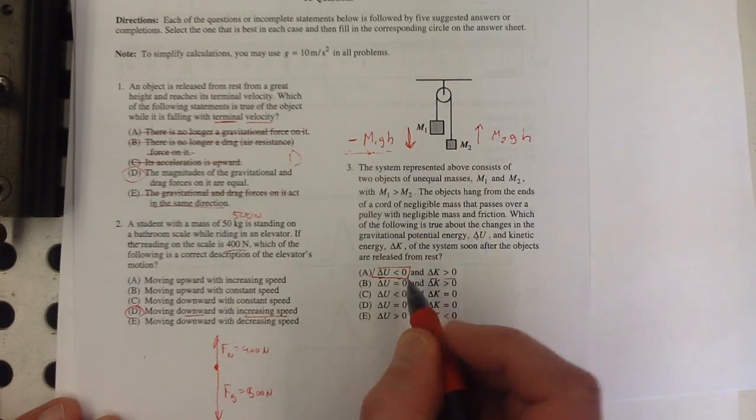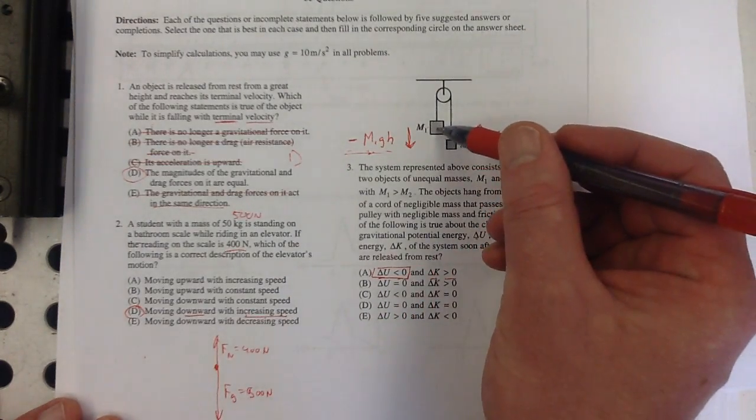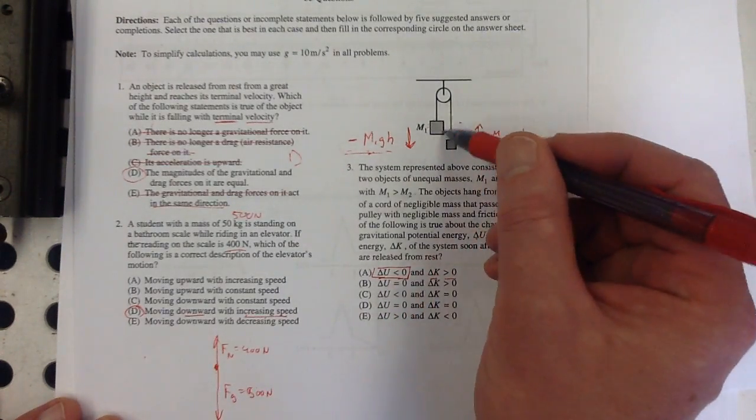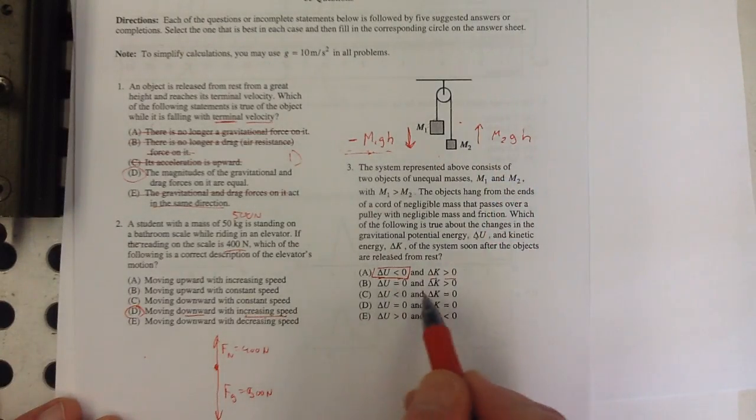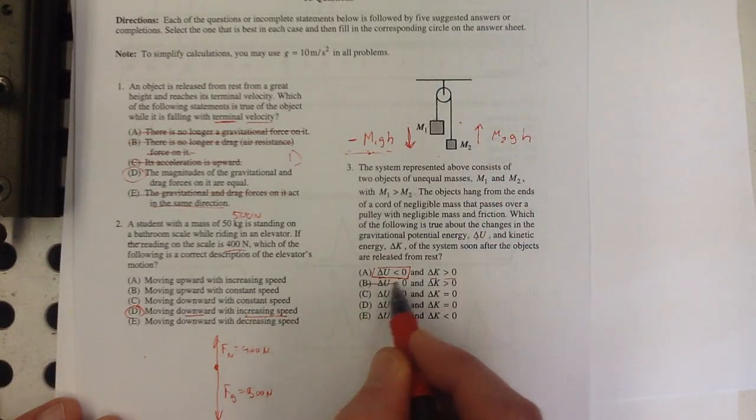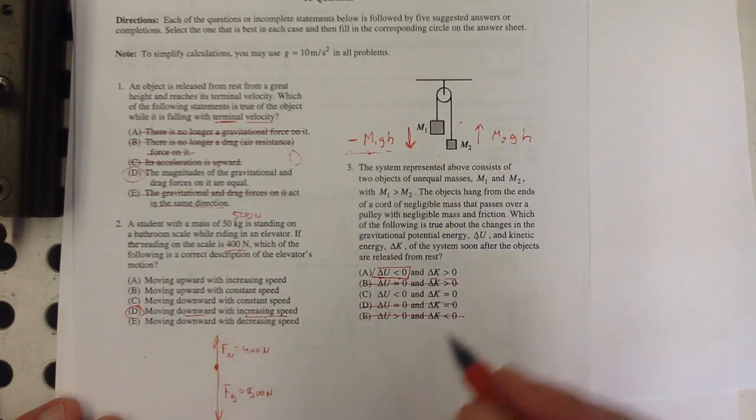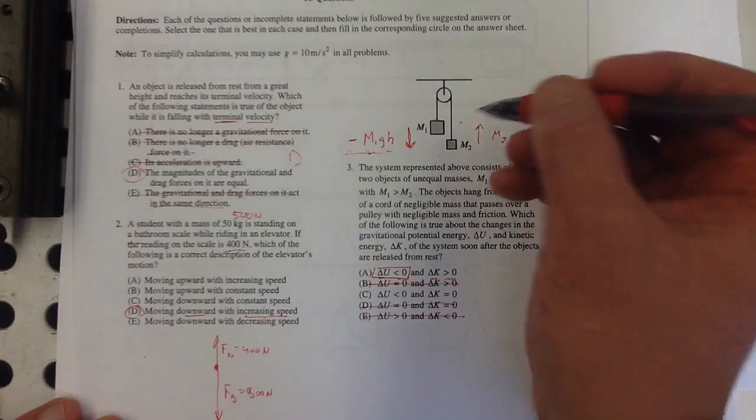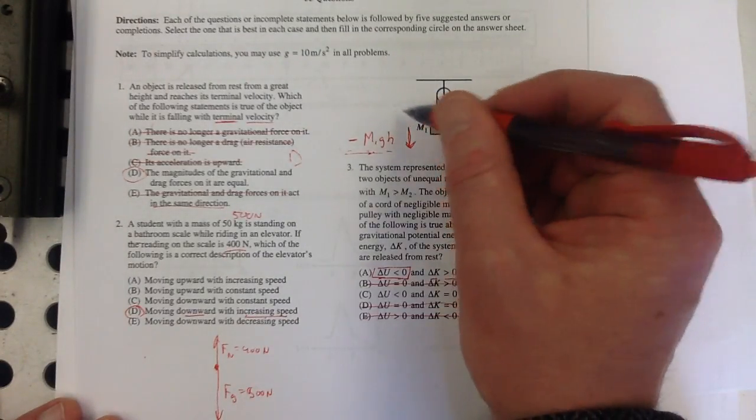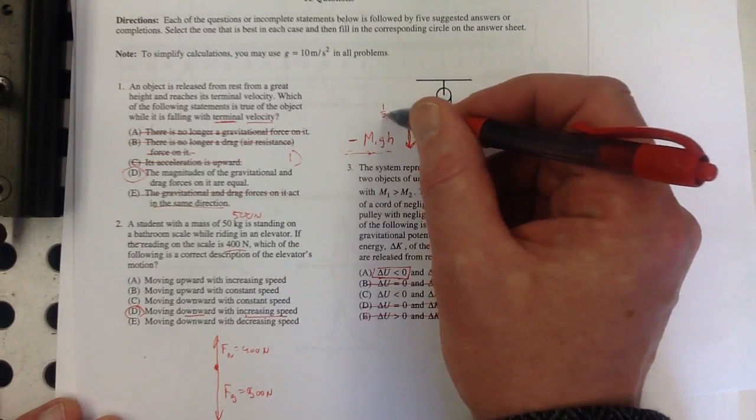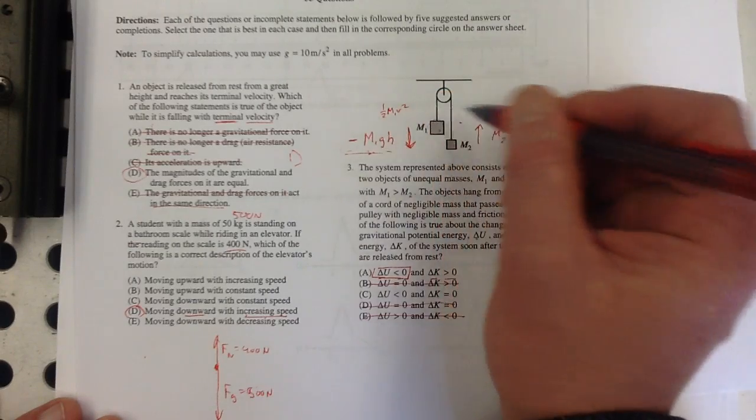The change in potential energy is negative because this one goes down the same amount as this one goes up and this one's bigger. So that eliminates a bunch of these answers. And the change in kinetic energy—they're moving from rest.